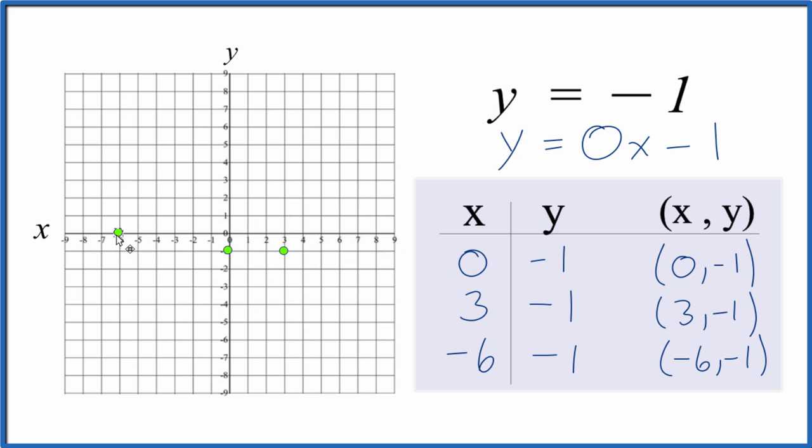When x is negative 6, y is negative 1. So let's put a line through this. That gives us our graph here for the equation y equals negative 1. Put arrows to show that this goes to infinity. And that's our graph for y equals negative 1.